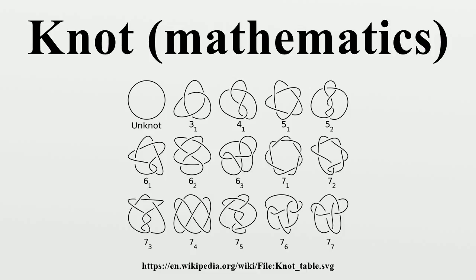Tame versus wild knots: A polygonal knot is a knot whose image in R3 is the union of a finite set of line segments. A tame knot is any knot equivalent to a polygonal knot. Knots which are not tame are called wild and can have pathological behavior.